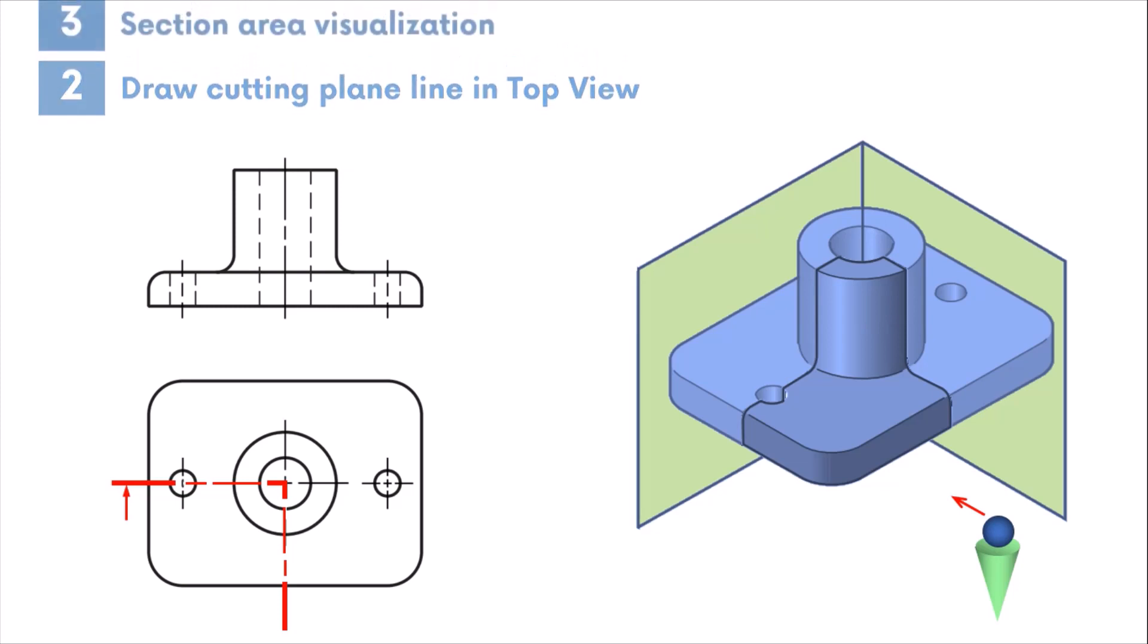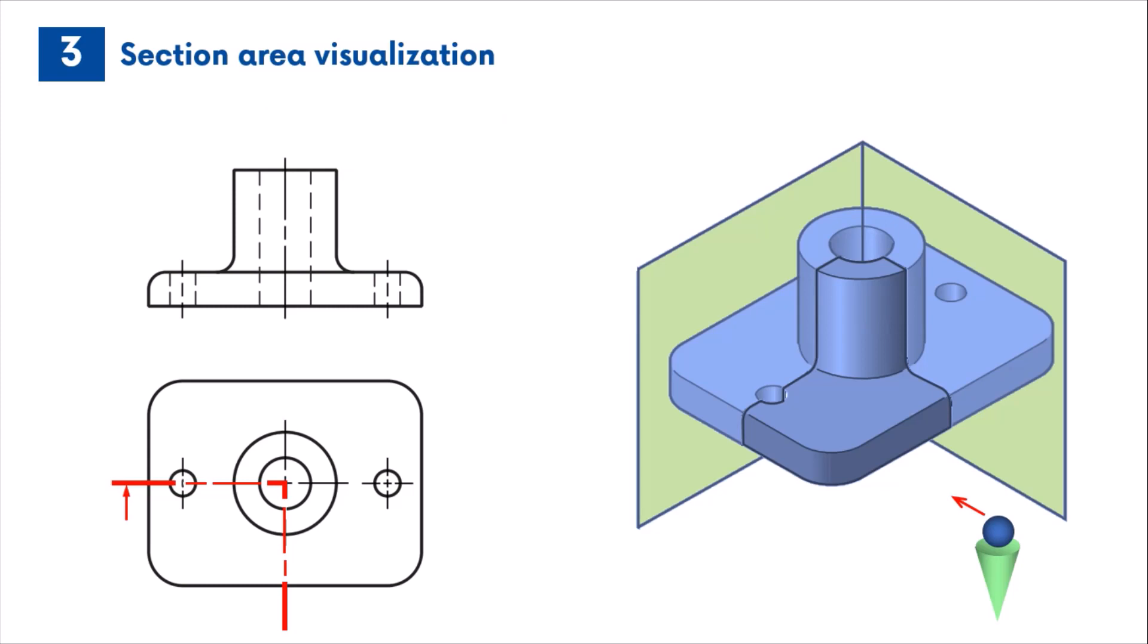The next step involves the mental visualization of the section process. The sectioning process has removed the left front quarter of the part and has generated three new surfaces.